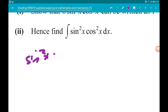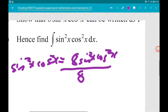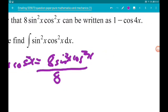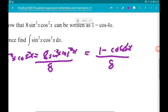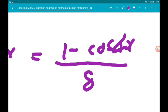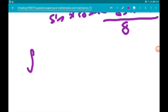sin squared x cos squared x is 8 sine squared x cos squared x over 8. So using the identity we know that that is 1 minus cos 4x over 8. So that is what we are now going to integrate.